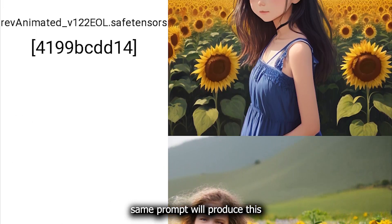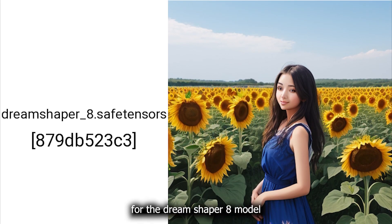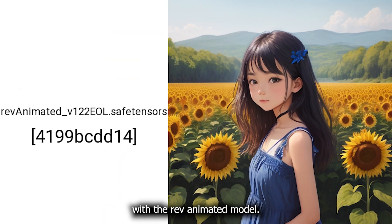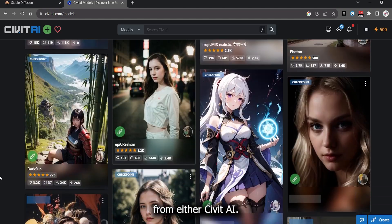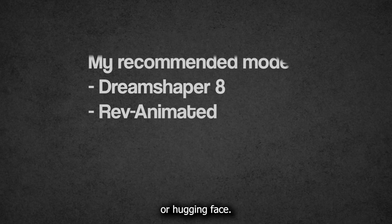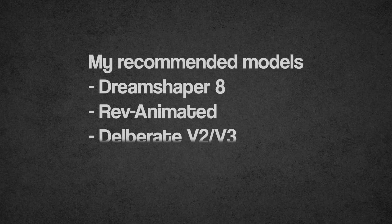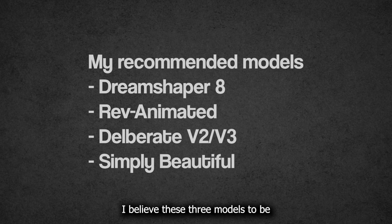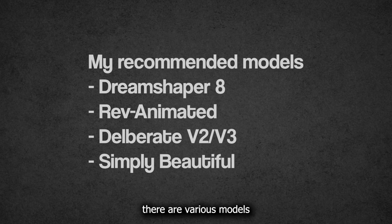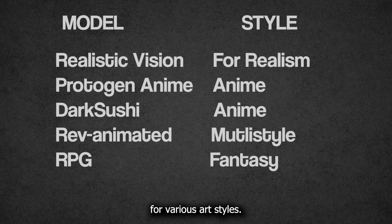While the same prompt will produce this with the Dream Shaper 8 model, and you can see how the prompt performed with the Rev Animated model. You can download checkpoints from either Civit AI or Hugging Face. My recommended checkpoints are Dream Shaper 8, Rev Animated, and Deliberate V2 or V3. I believe these three to be the most versatile models, and there are various models for various art styles — you can check them out on CivitAI.com.